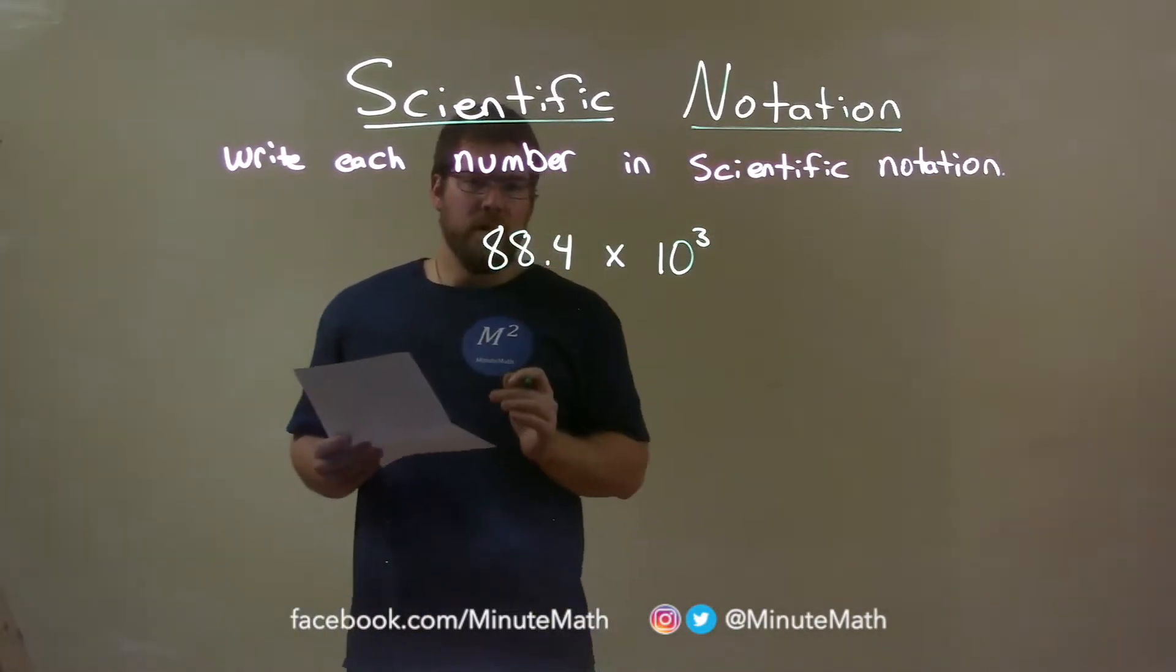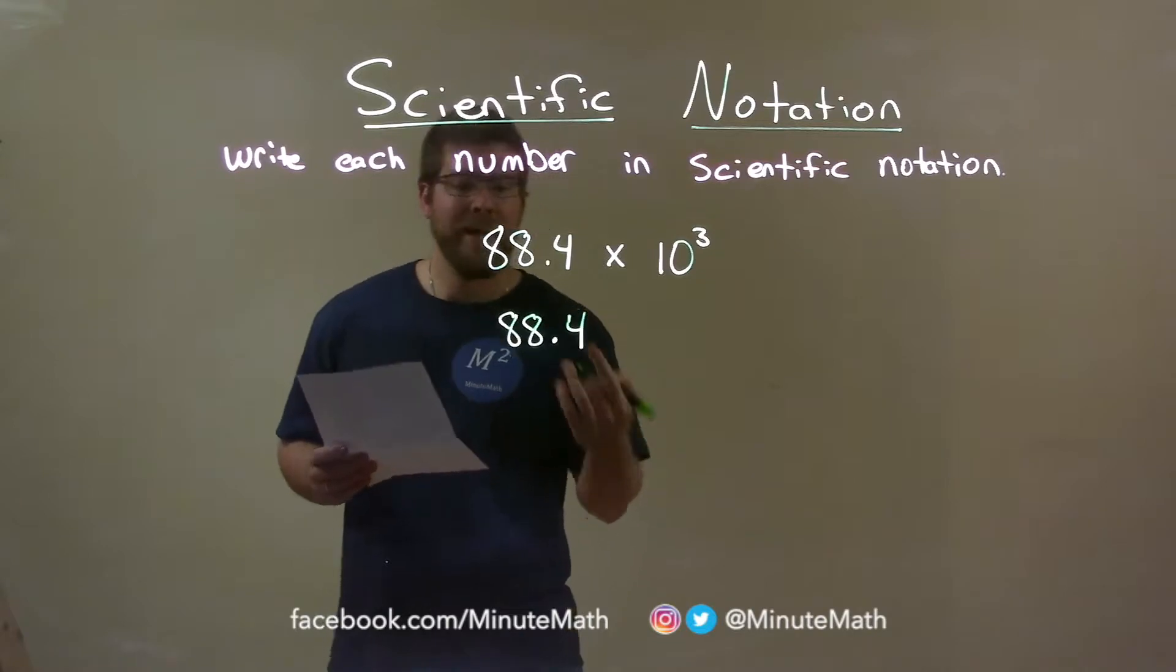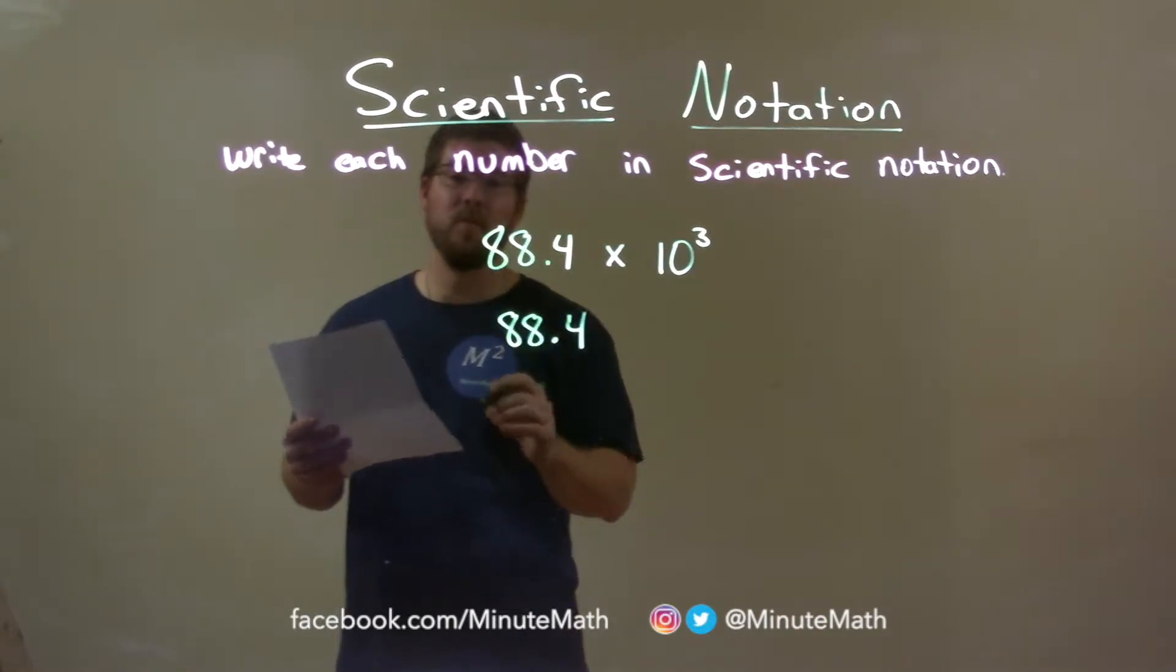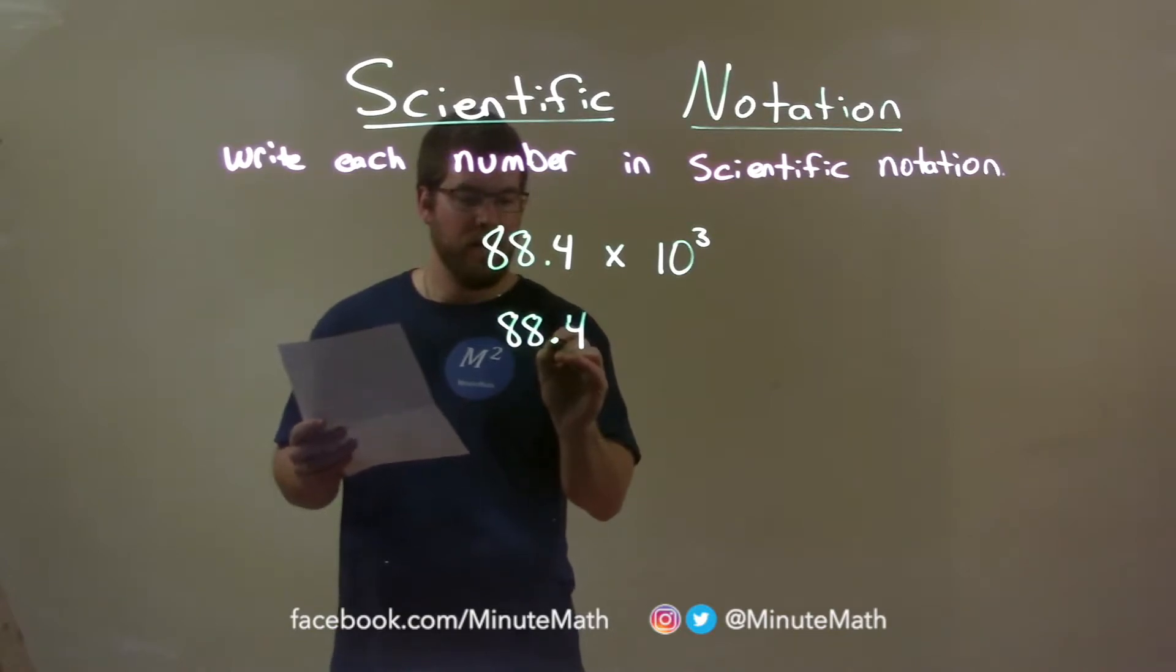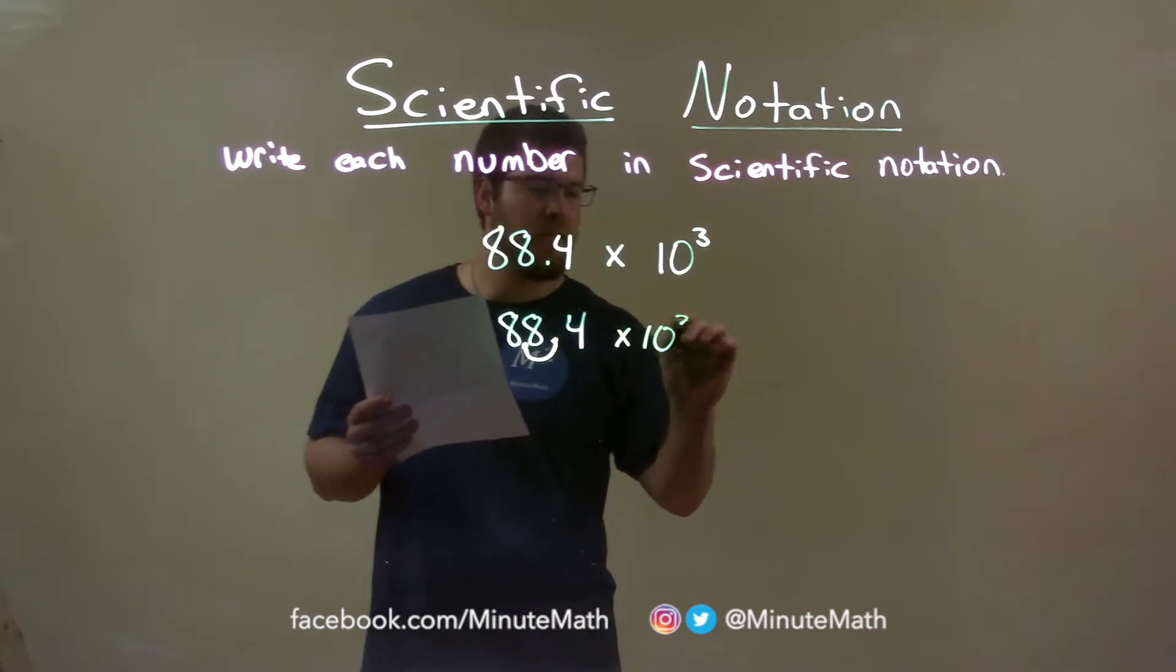Well, first thing I want to do is I'm going to write that 88.4 again. I know I need to take this decimal and get it to the left to one spot. So this 8 right here is in the ones position. So I'm going to do that, one spot to the left. Let's bring down the 10 to the third power.